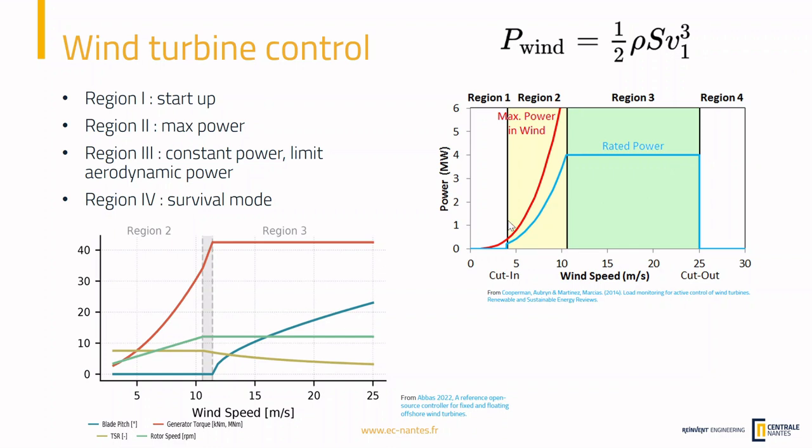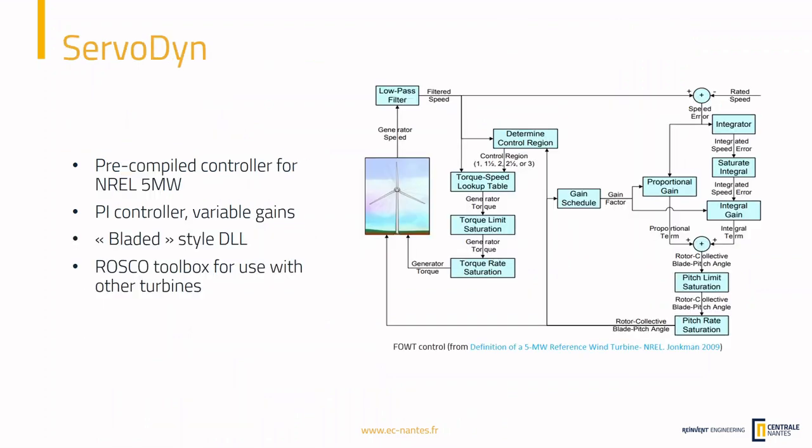Now that we talked about general wind turbine control, let's talk about how it's implemented in ServoDyn. In ServoDyn, you can implement various controllers in the form of a DLL — a dynamic link library. On Windows it has a .dll extension, and on Mac or Linux a .so extension. This interface provides a few outputs to the OpenFAST code and receives some inputs in order to tune the controller. We will use a controller already compiled by NREL and explain how it works based on the principles discussed earlier.